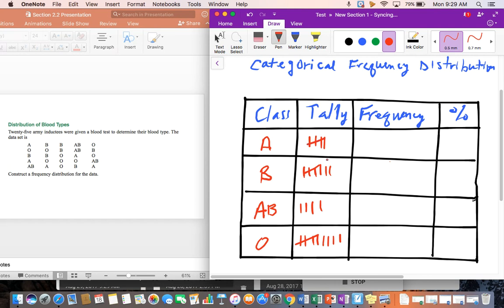All right, and then our frequency is we're going to count up all of our tallies. So we have five blood type A's. We have seven blood type B's. We have four blood type AB, and we have nine blood type O. So you can count up your frequencies pretty quickly. So five plus seven is 12, plus four is 16, plus nine is 25, and we know that we had 25 army inductees.